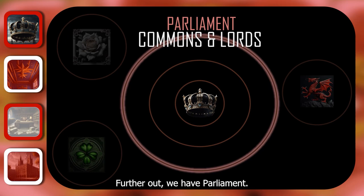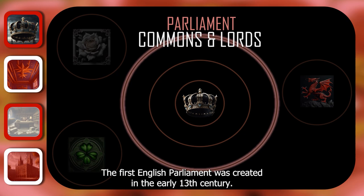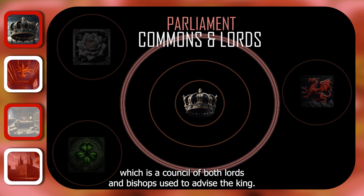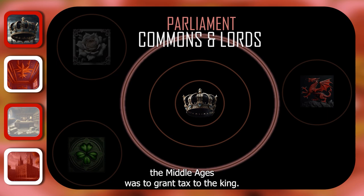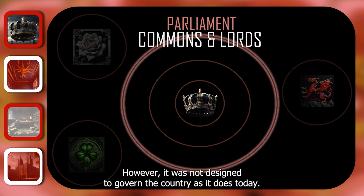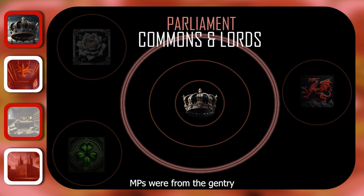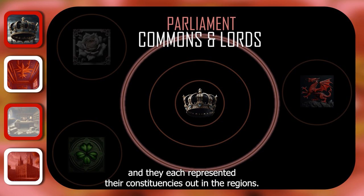Further out, we have Parliament. The first English Parliament was created in the early 13th century, following on from the signing of the Magna Carta in 1215. It essentially evolved out of the Great Council, which is a council of both lords and bishops used to advise the King. The most important role that Parliament played during the Middle Ages was to grant tax to the King. However, it was not designed to govern the country as it does today. The House of Lords was the most important house, with 227 members. Less influential was the House of Commons, where MPs would sit, representing their constituencies out in the regions.